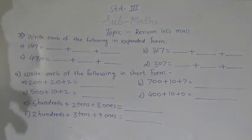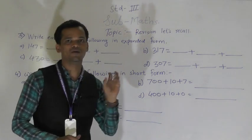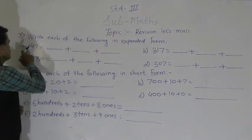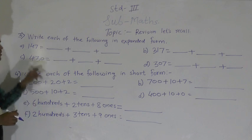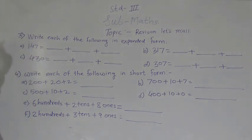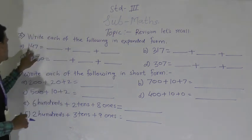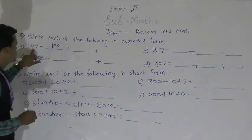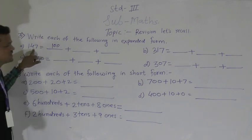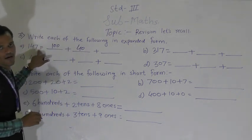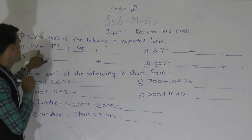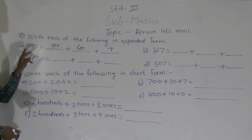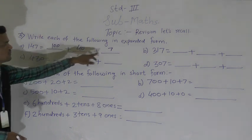The instruction is: write each of the following in expanded form. So the given number we have to write in the form of their place values. First number: 147. Write the place value of each digit. 1 comes at the hundreds place so its place value is 100. 4 comes at the tens place so its place value is 40. And 7 comes at the ones place so its place value is 7. So 147 = 100 + 40 + 7.